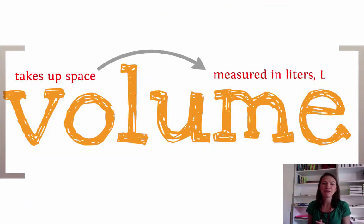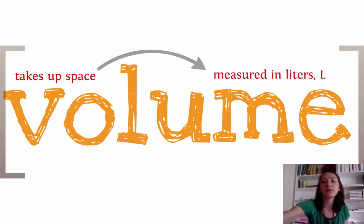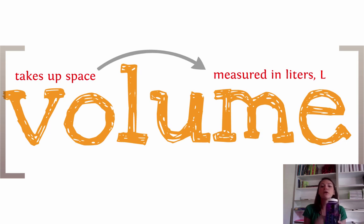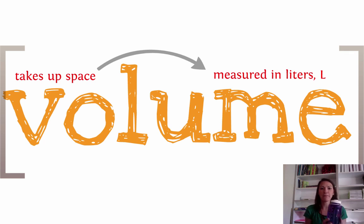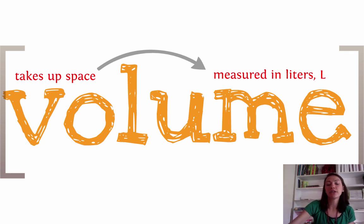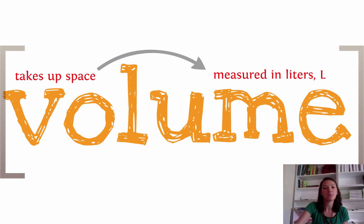Volume — you guys are probably a little bit more familiar with volume. It's the characteristic that takes up space, and it's measured in liters. For example, I've got my Nalgene here, and we've got some measurements on the side to measure the volume of water — the amount of water that's in here. Volume you can measure for a liquid, a solid, or a gas. It just will change because gases and liquids take the shape of their container. It's going to be measured in liters; we sometimes will use milliliters, but liters is the standard unit.